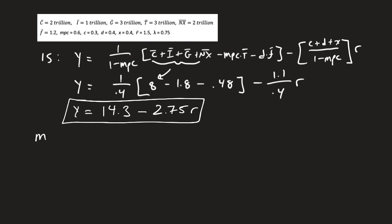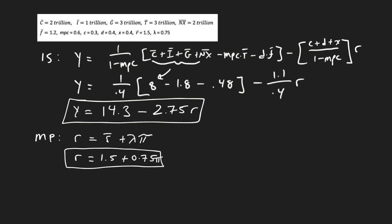The next thing we want is the MP equation, which is actually quite simple. It's R equals R-bar plus lambda times pi. That's just given to us: R-bar is 1.5 and lambda is 0.75. So we have our MP equation. Remember, the IS function is Y as a function of R, and the MP curve is R as a function of pi. Now we have both and can finish this problem.